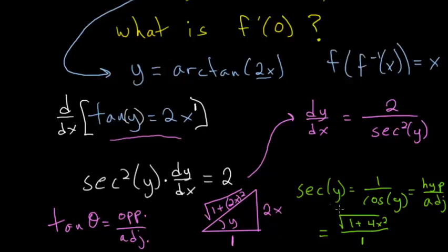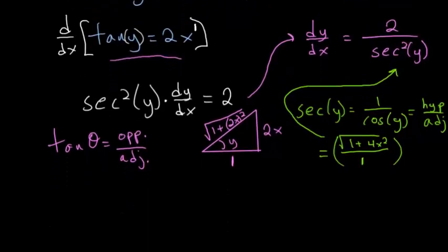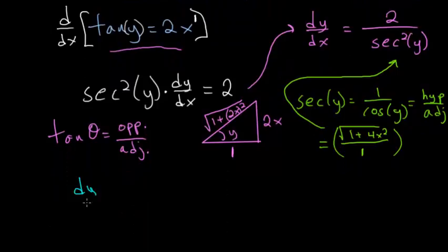...we can substitute this quantity here into our relationship for the derivative of y with respect to x. So in the end, this dy over dx is equal to 2 divided by the secant squared of y, which is this quantity here.